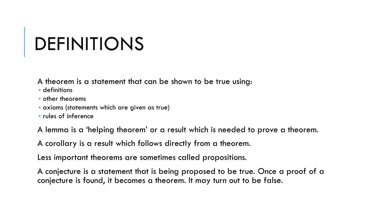A lemma is a helping theorem — not a completed result on its own, but one needed to prove a theorem. We also have a corollary, which is a result that follows directly from a theorem — essentially the conclusion or result derived from a specific theory. A conjecture is a statement proposed to be true; once a proof is found it becomes a theorem, or it may turn out to be false.